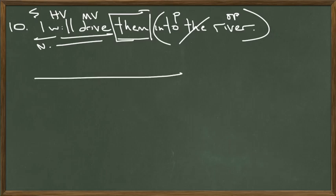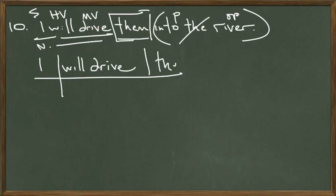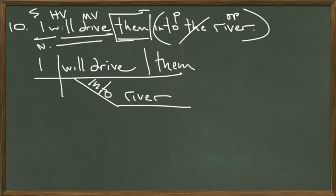Here's our sentence — let's diagram it. We'll divide the line and put the subject on the subject side: I. The verb on the verb side: I will drive. There's our basic sentence. I will drive whom? I will drive them — the direct object. And this is not driving somebody into the river with a car; this is a military sentence. I will drive them where? I will drive them into the river — the prepositional phrase goes underneath the verb.